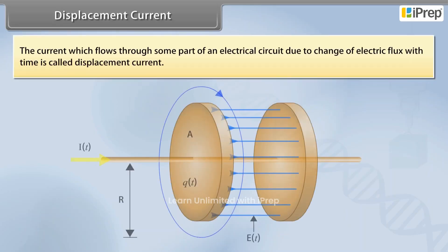Displacement current. The current which flows through some part of an electrical circuit due to change of electric flux with time is called displacement current.